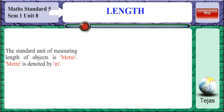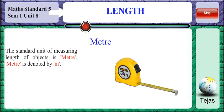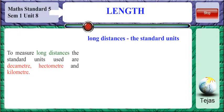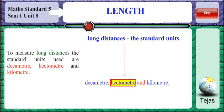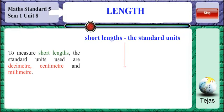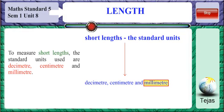The standard unit of measuring length of objects is the meter, denoted by the small letter 'm'. To measure long distances, the standard units used are decameter, hectometer, and kilometer. To measure short lengths, the standard units used are decimeter, centimeter, and millimeter.